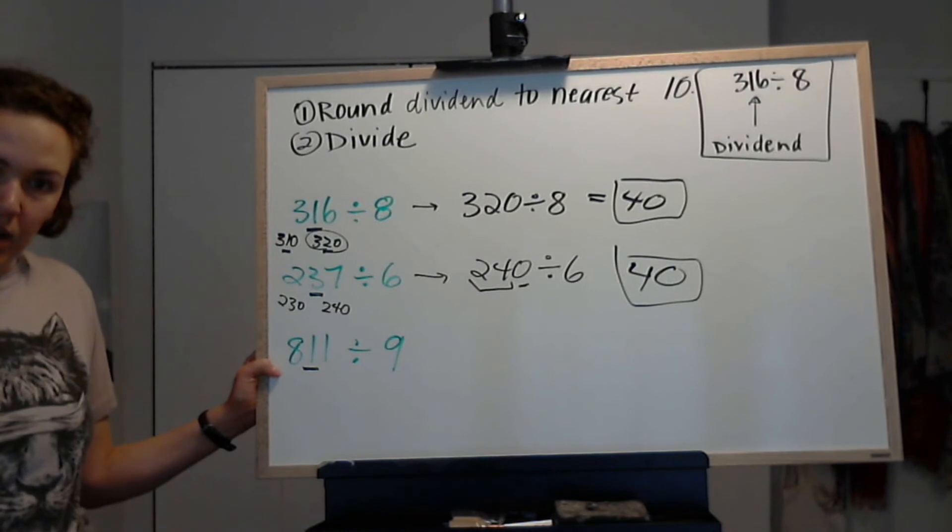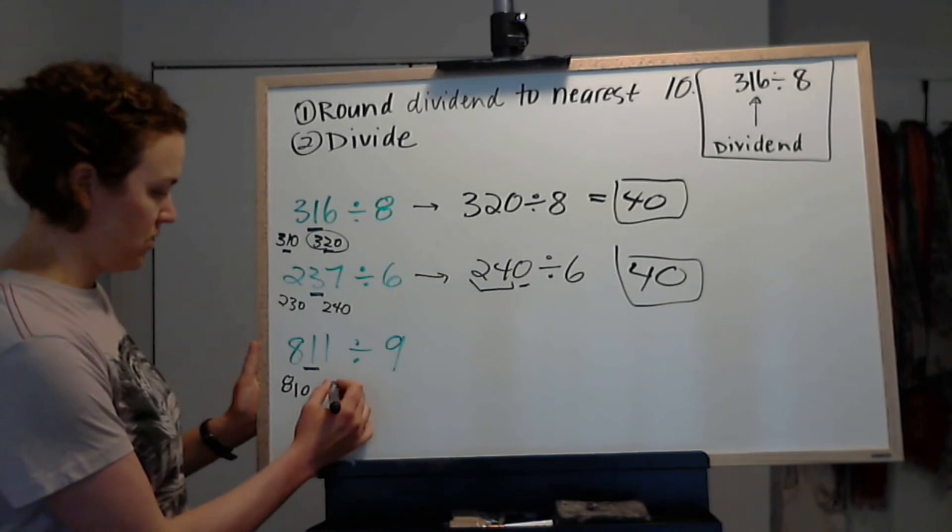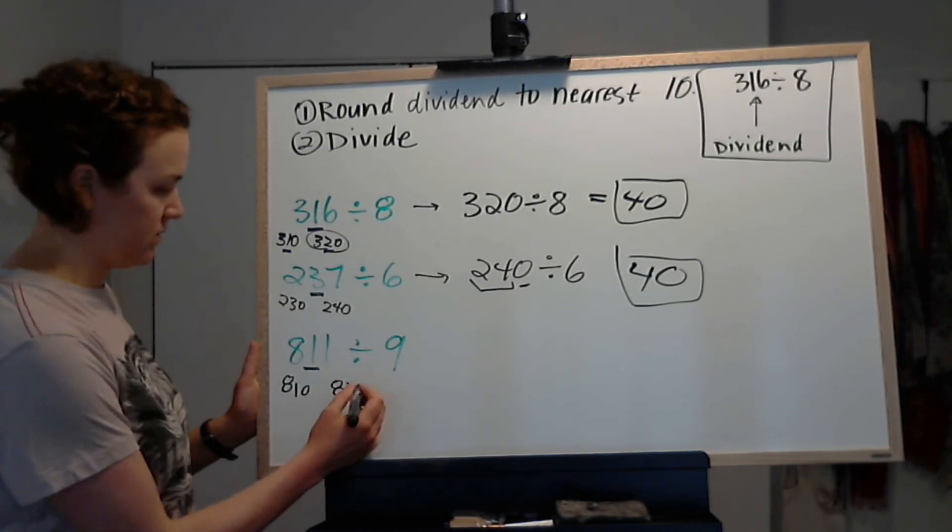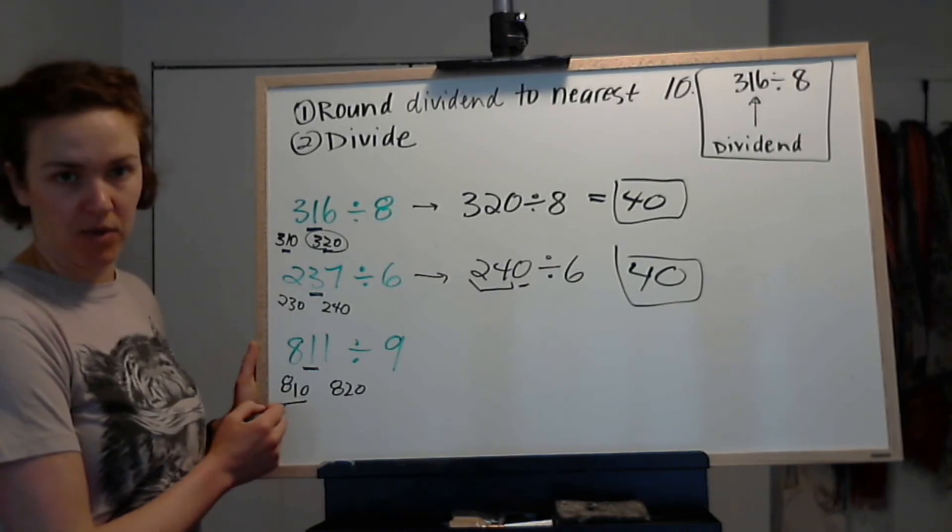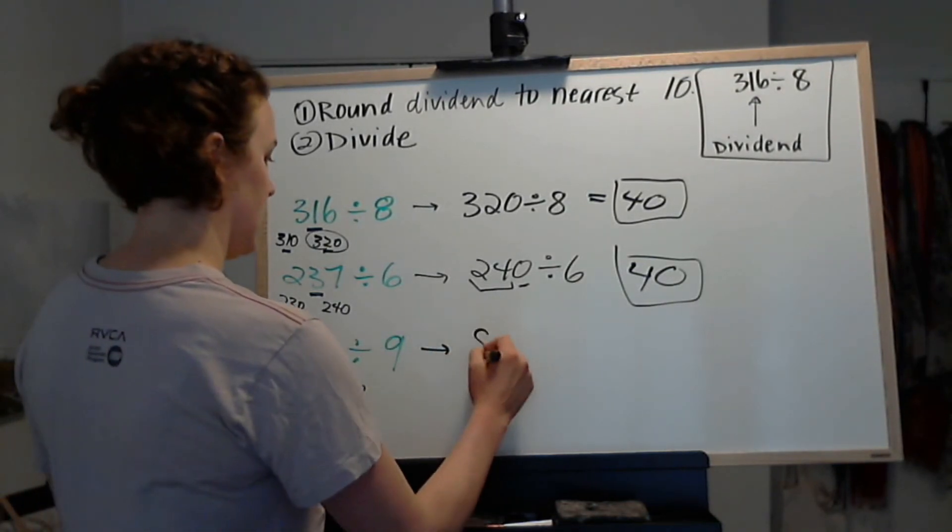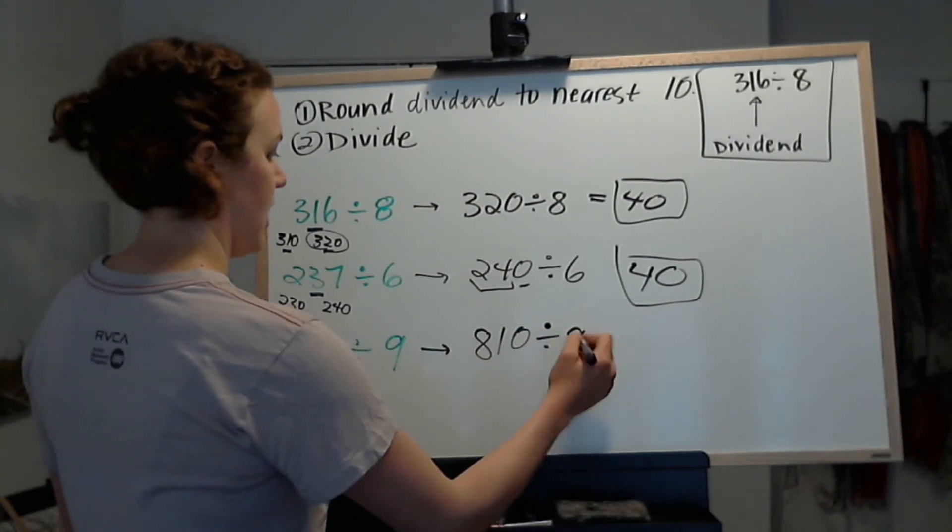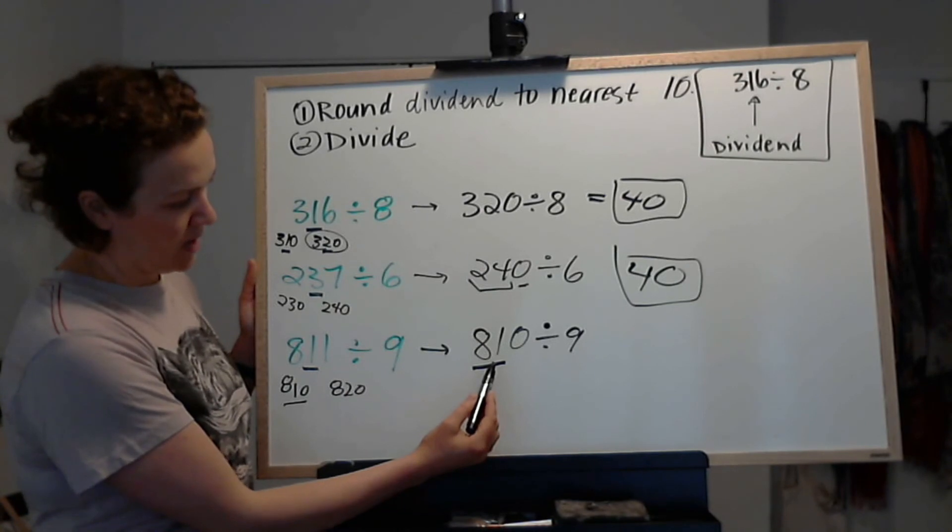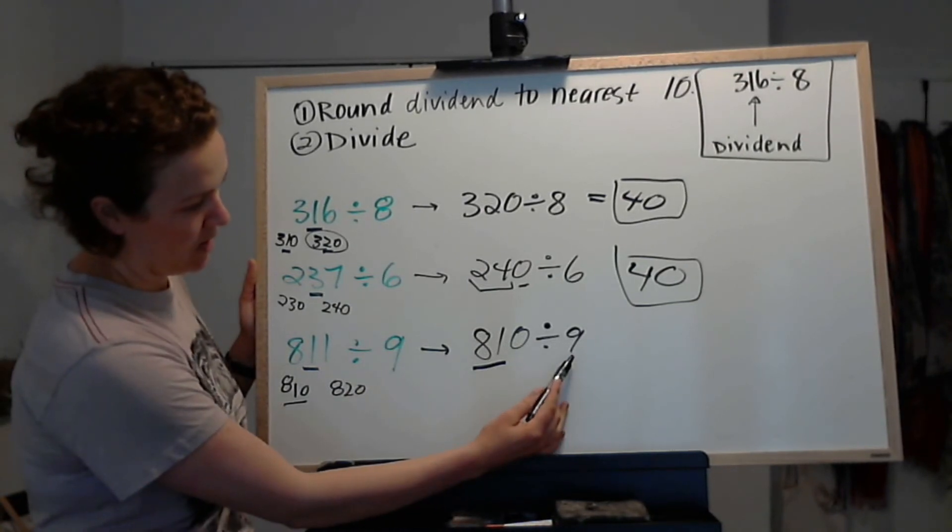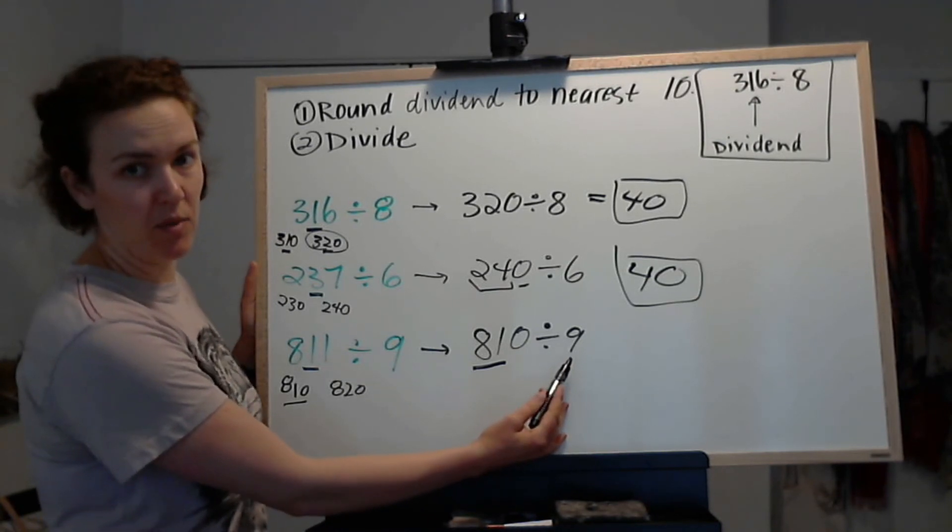Last one, 811 divided by 9. Is this closer to 810 or 820? It's only 1 away from 810, so that one's closer. 810 divided by 9. I know that 81 divided by 9 is 9, because 9 squared is 81.